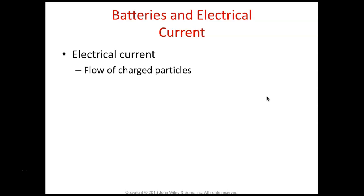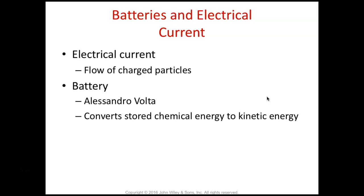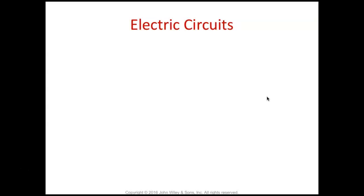And the last thing is that these batteries and electrical current. So the electrical current is quite literally this flow of charged particles. And batteries were made by somebody named Alessandro Volta. That volt is a pretty good way to remember that. He was able to make a battery, which is something that converts stored chemical energy to kinetic energy. So it still works where we have the stored potential chemical energy that's being able to be changed in form into kinetic energy or the energy that does work.